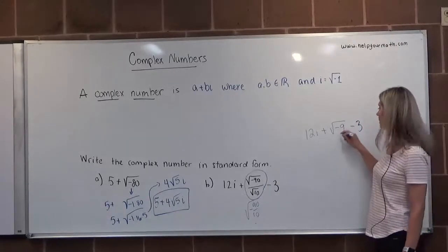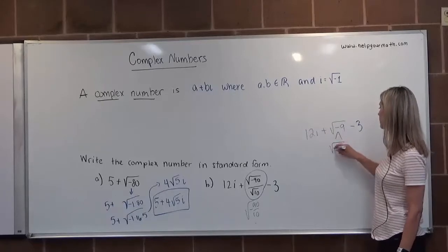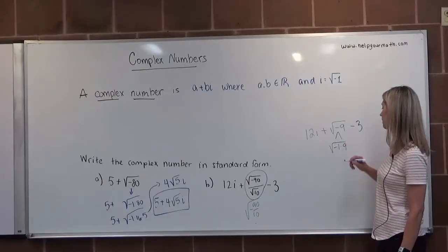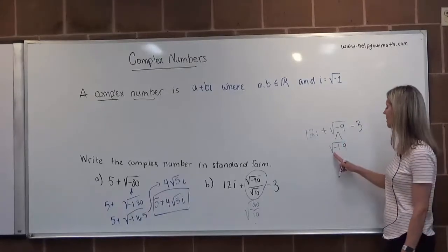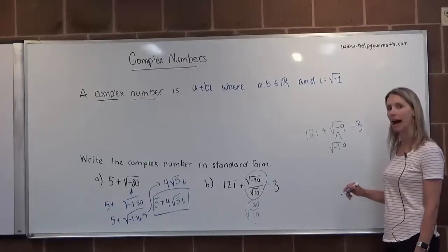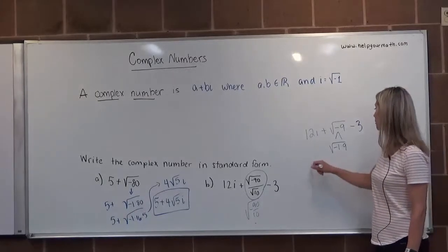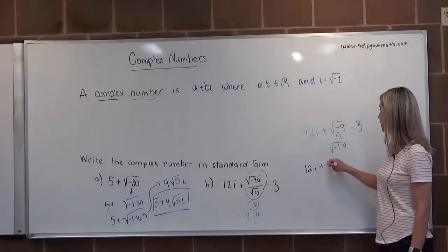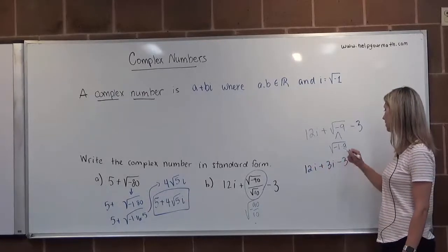The square root of negative nine has two parts, it's the square root of negative one times nine. The square root of negative one is i and the square root of nine is three. So we're going to rewrite this as 12i plus 3i minus three.